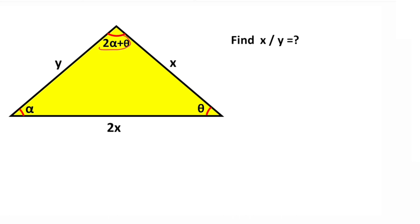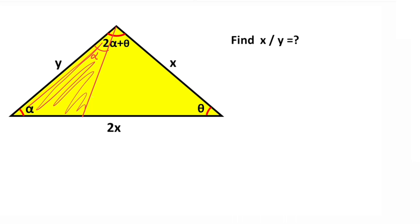First of all, notice that this angle is greater than alpha, so if we take an angle of alpha degrees from here, we get an isosceles triangle. Let's call this point m, so this side length must be equal to m units.